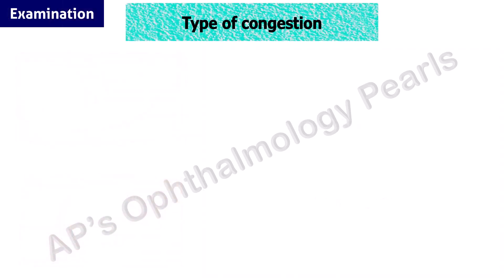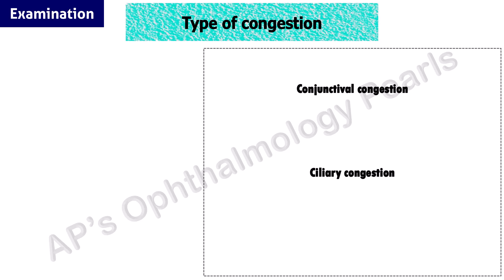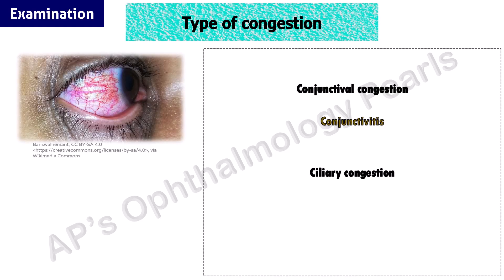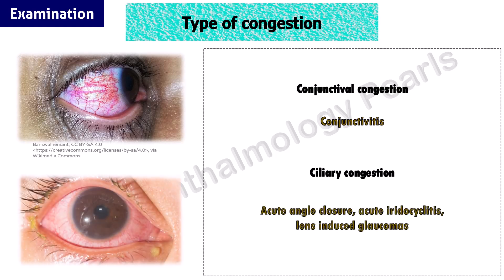The type of congestion may provide a clue — it may either be conjunctival or scleral congestion. Conjunctival congestion is present in conjunctivitis, whereas scleral congestion suggests a deeper pathology such as acute angle closure, acute iridocyclitis, or lens-induced glaucomas.